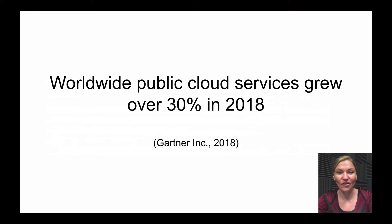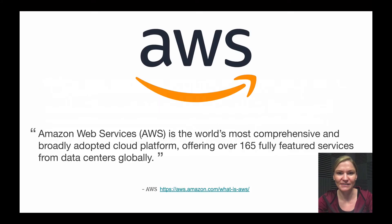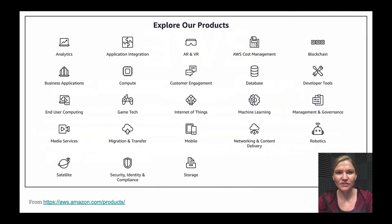In 2018, all of the public cloud services grew about 30 percent, and out of those cloud services, AWS is the largest provider. They account for almost half of all cloud-based computing services. AWS offers about 165 managed cloud-based services, broken down into multiple categories like you see here — everything from computing power to run our applications, to managed databases both relational and non-relational, to analyzing IoT device data, and developer tools to build, test, and deploy your code.